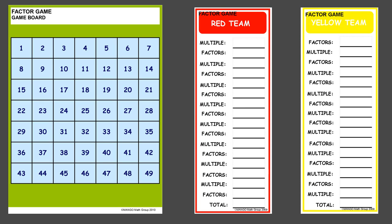To play this game, students will either be 2 players or 4 players with 2 players on a team. Each player or team will have one of the red cards or the yellow cards. To start this game, the red players will always go first because they have 'multiple' on the top of their game board, and they are going to select any number on the game board that they would like to cover.